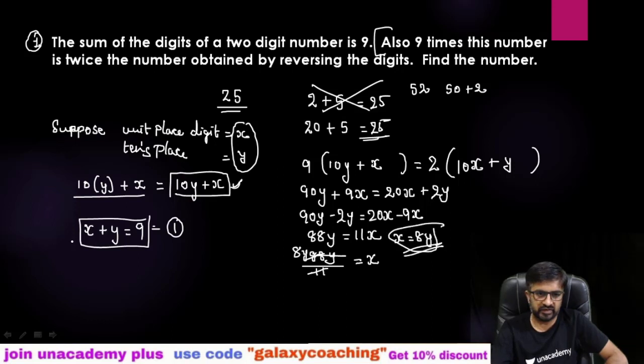Now keep this value in the first equation. Instead of x we are going to put 8y. Here 8y + y equals 9. So here you will get 9y equals 9 and y will be 1. y equals 9 by 9, which is 1.